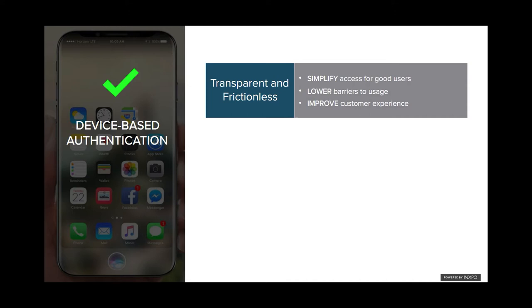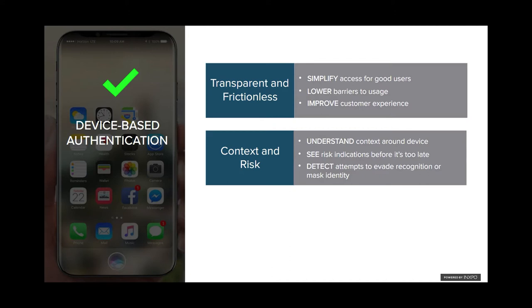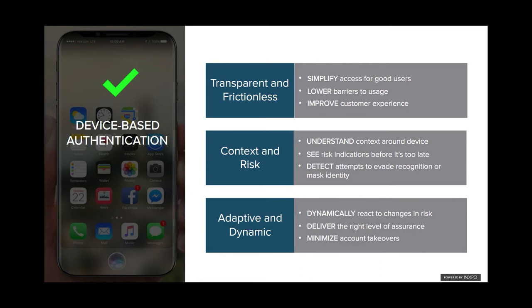What are some of the benefits of device-based authentication? One, it's transparent and frictionless — it simplifies access for good users and lowers barriers to usage, improving customer experience. It also gives you context and risk insight that many authentication systems lack: understanding the context around the device, looking for risk indicators before account takeover can happen, and detecting attempts to evade or mask identity. It's also highly adaptive and dynamic, so you can react to your changing risk profile, deliver the right level of assurance, and minimize unneeded step-ups to streamline your authentication process. And it can be layered on top of your existing authentication.